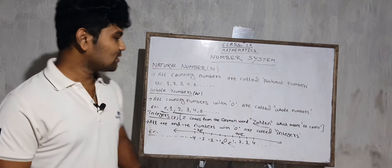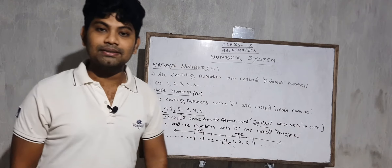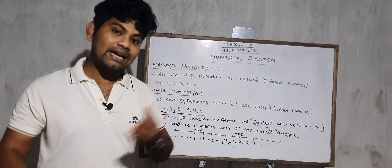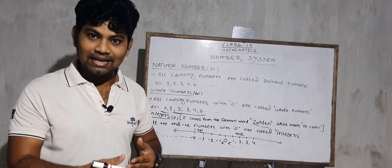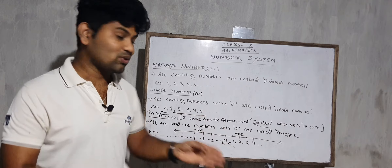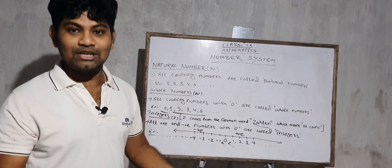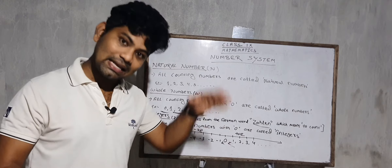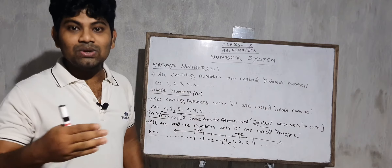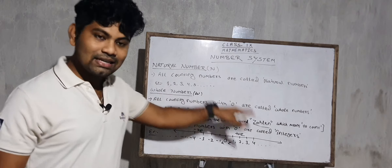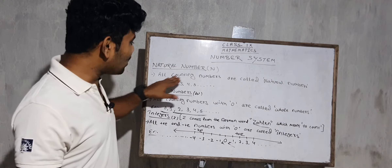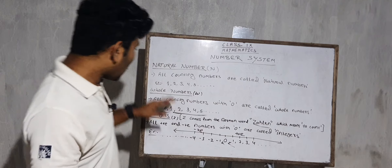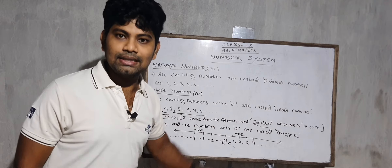First we will read about the natural number. So what is the natural number? Which numbers are 1, 2, 3, 4? If it is the natural number. So what is the counting number? All counting numbers are called the natural number. Example: 1, 2, 3, 4, up to infinity — these are called the natural number.